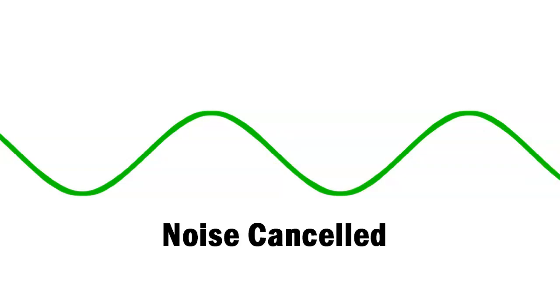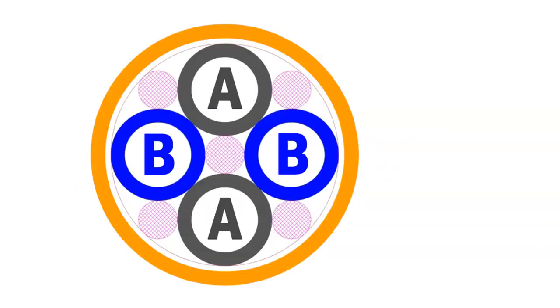But what if, just in theory, what if whenever one wire was on top in that XLR cable, it could be on the bottom at the same time? Well, that's what a quad cable does. It takes, in a regular cable, the A signal and the B signal. A would be just one wire, and B would be just one wire. But in the quad cable, it splits A into two wires so that as they spiral around one another,